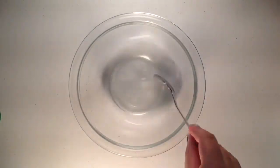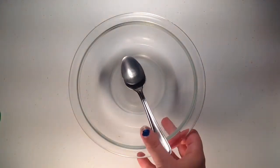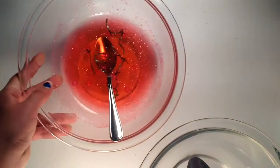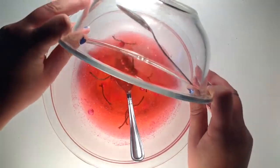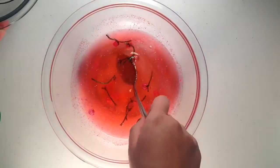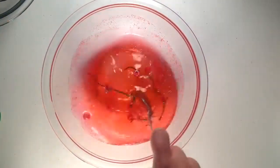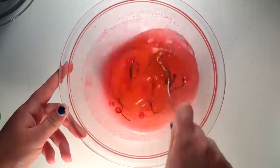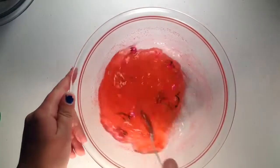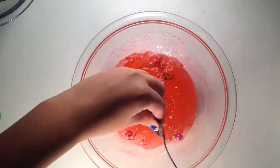Now once you've got that dissolved, you can go ahead and bring your cherry mix back over. Go ahead and add that to your cherries. And go ahead and stir it. Now you can go ahead and start kneading.